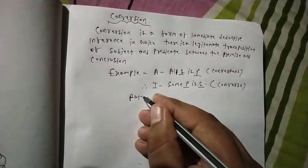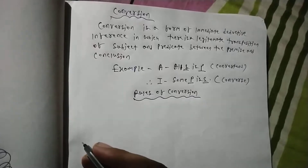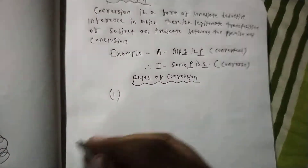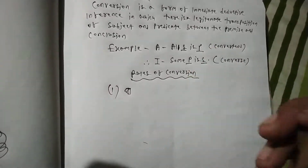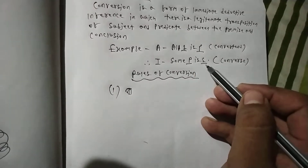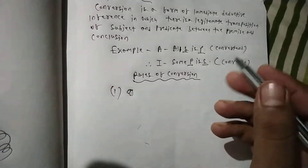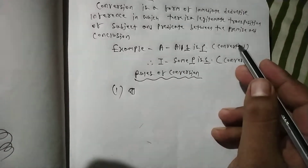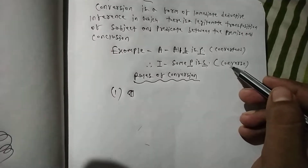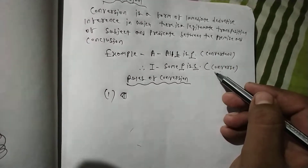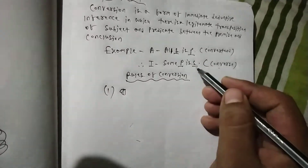Rules of conversion. First rule: the subject of the premise becomes the predicate of the conclusion and the predicate of the premise becomes the subject of the conclusion. Second rule: there is no change in quality between the premise and conclusion — between the convertend and converse. Third rule: any term which is not distributed in the convertend cannot be distributed in the converse.